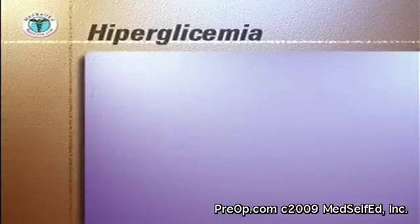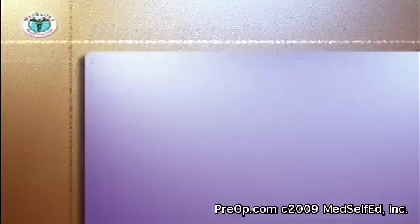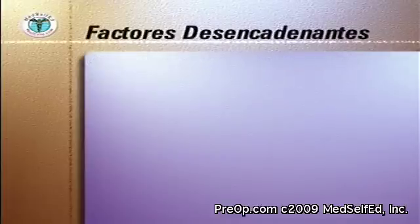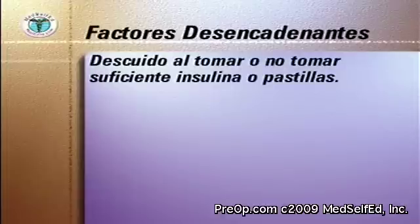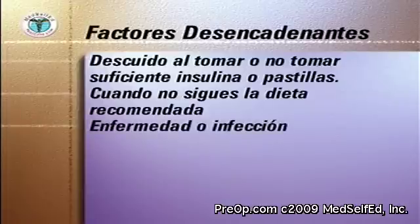Azúcar alta o hiperglicemia ocurre cuando su azúcar en sangre está por encima de 250 miligramos por decilitro. Hiperglicemia puede ocurrir cuando usted ha olvidado una dosis de insulina o no ha tomado lo suficiente, si se ha desviado de la dieta recomendada, o si tiene una enfermedad, infección o exceso de estrés.